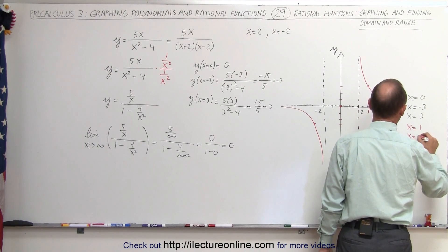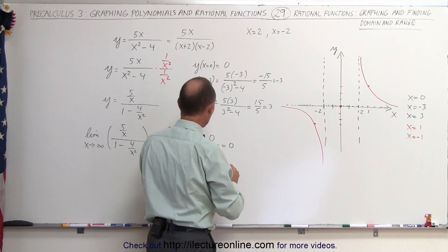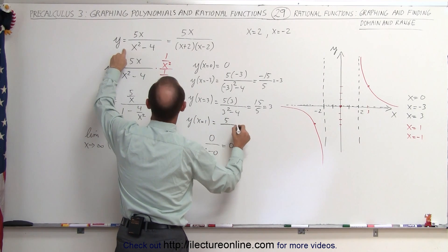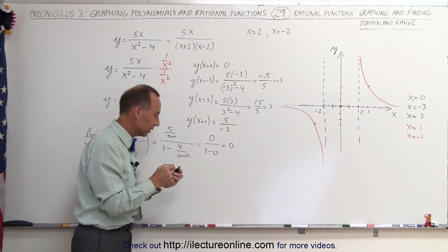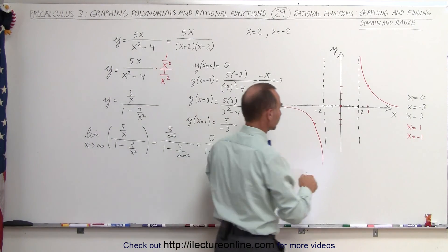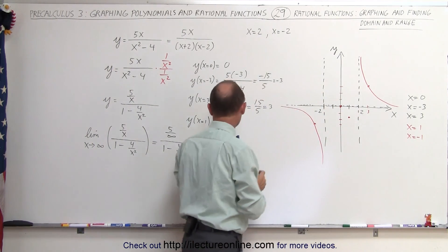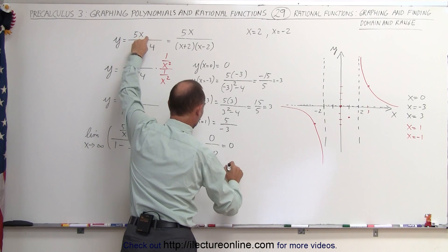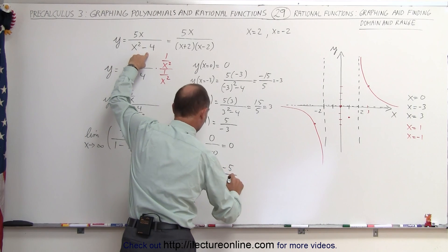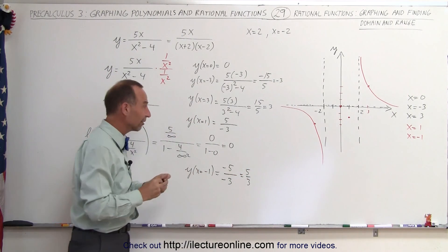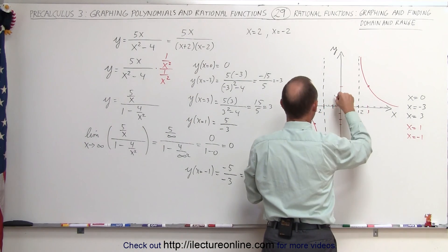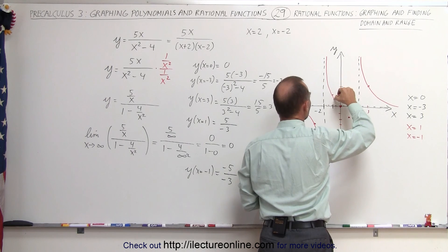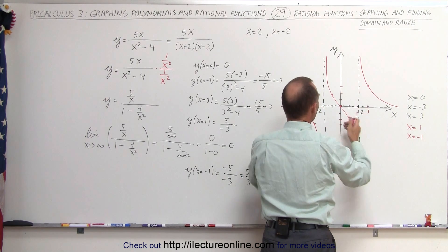How about x = 1 and x = -1, just to see what happens in the middle region. When x = 1, that gives 5 in the numerator and 1 minus 4, which is -3, in the denominator, so y = -5/3. When x = -1, we get 5 times -1 which is -5, and (-1) squared is still 1, minus 4 is -3, so we get positive 5/3. Therefore when x = -1, y = +5/3. Since we cannot cross the vertical asymptotes, it looks like in between the function will look like this, and outside the function will look like that.